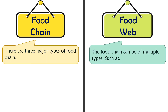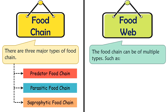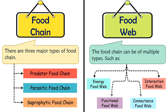Moving on to the types, the food chain can be of three main types: predator food chain, parasitic food chain, and saprophytic food chain. On the other hand, there are multiple types of food web including energy food web, functional food web, connectance food web, interaction food web, and others.